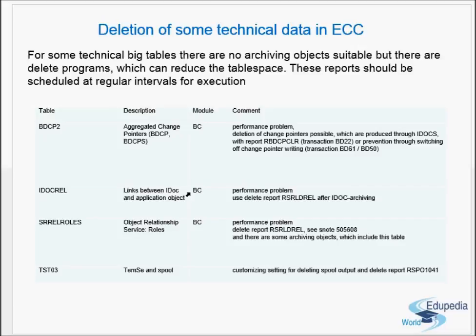The next table is IDOC REL — this stores links between IDOCs and application objects. Use the delete report RSRLDREL after IDOC archiving. This table's data is only deleted once the IDOCs are archived, at which point the links between IDOCs and application objects can be removed.